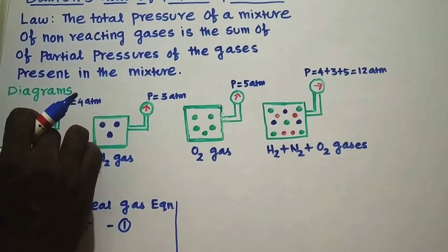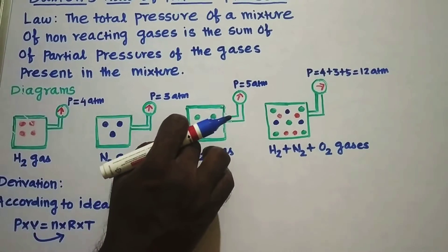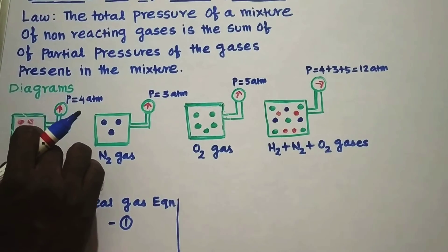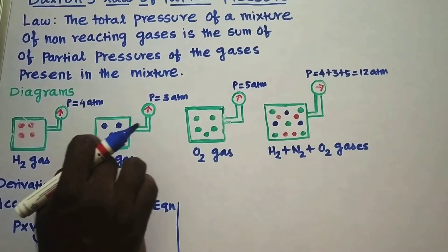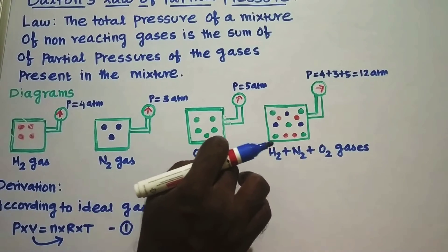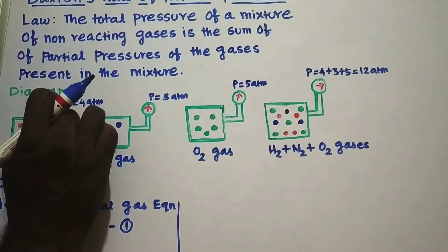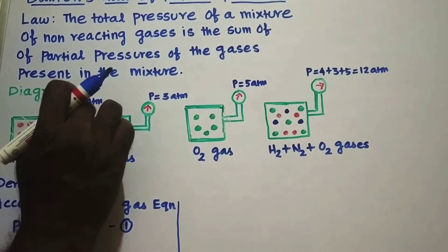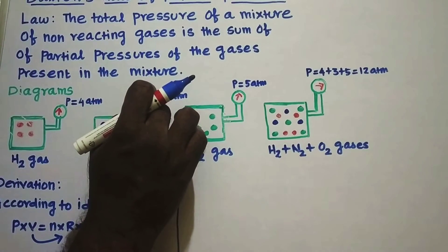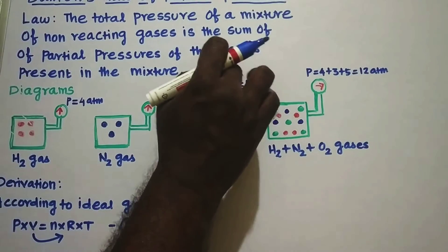Let us consider three containers: 1, 2, 3. In the first one, hydrogen gas is taken. In the second one, nitrogen gas is taken. In the third one, oxygen gas is taken. In the first one, the reading is equal to 4 atmosphere. In the second one, pressure is equal to 3 atmosphere. In the third one, the pressure is equal to 5 atmosphere.